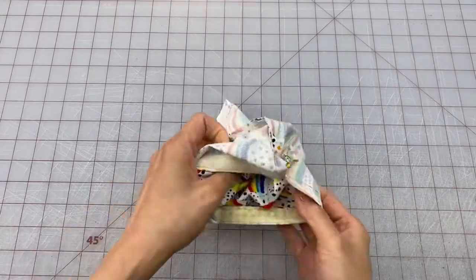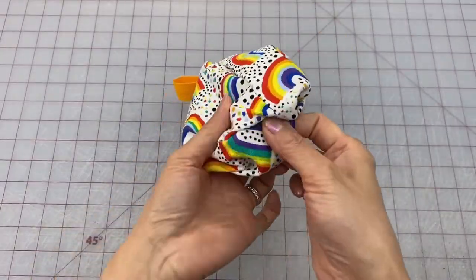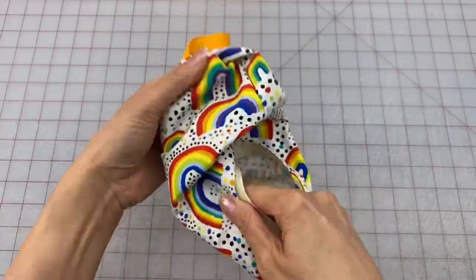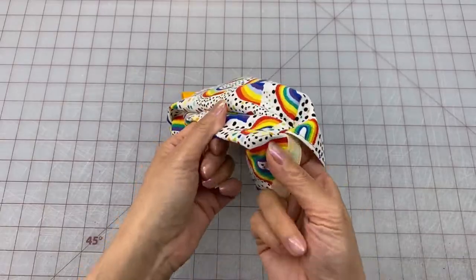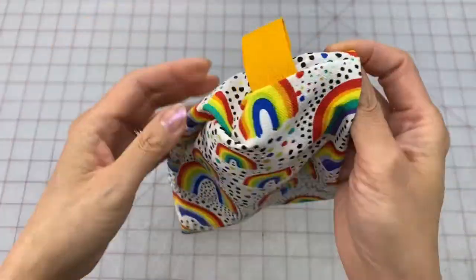To turn it right side out pull apart the velcro and then push the fabric through and poke out those bottom corners. At the top just pull apart those pleats and they'll lay nice and flat.